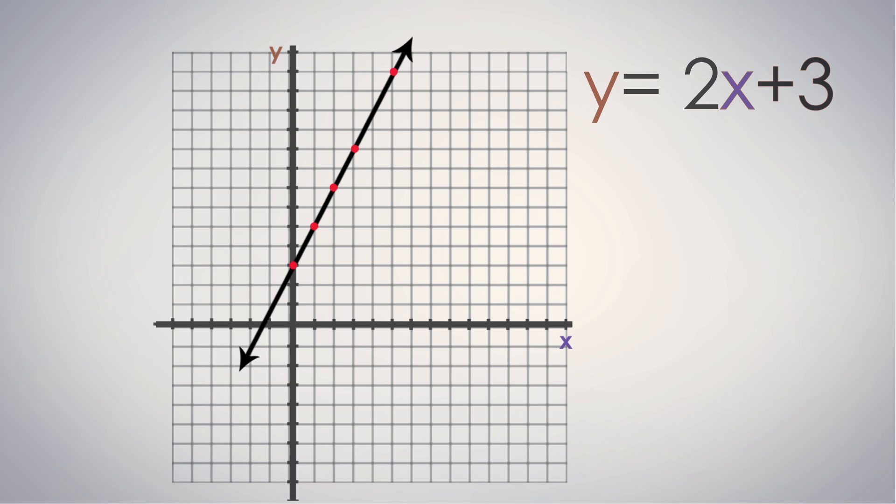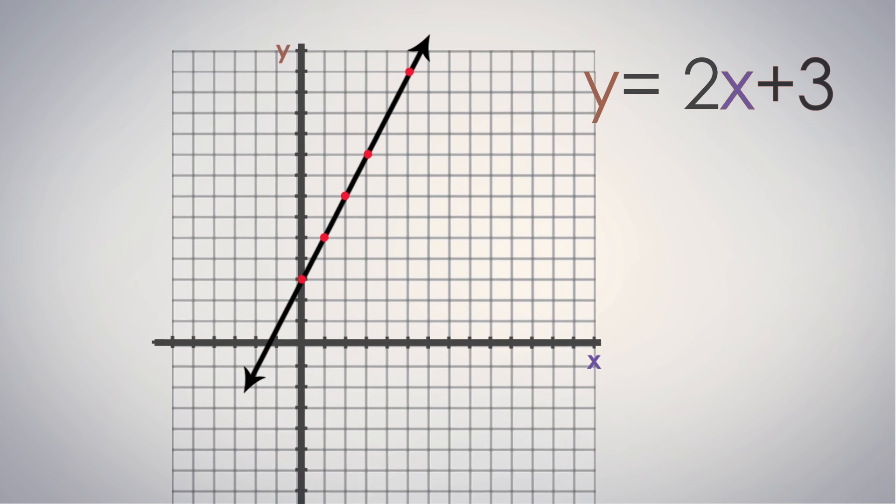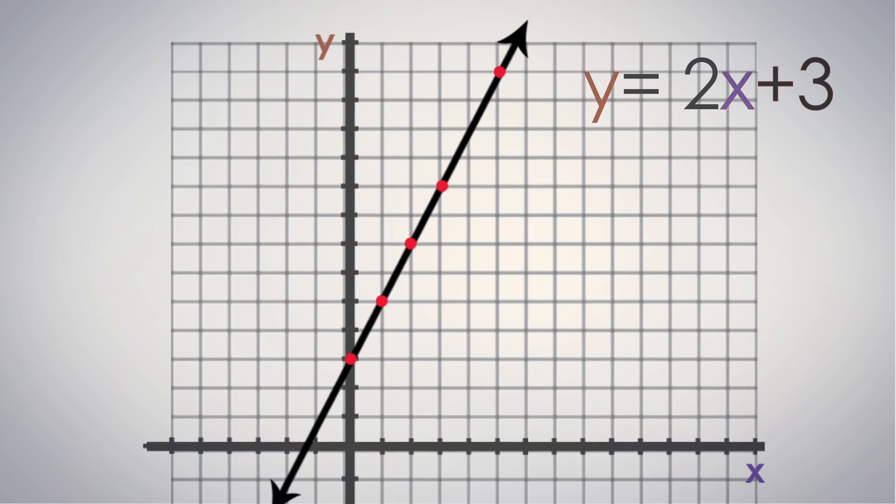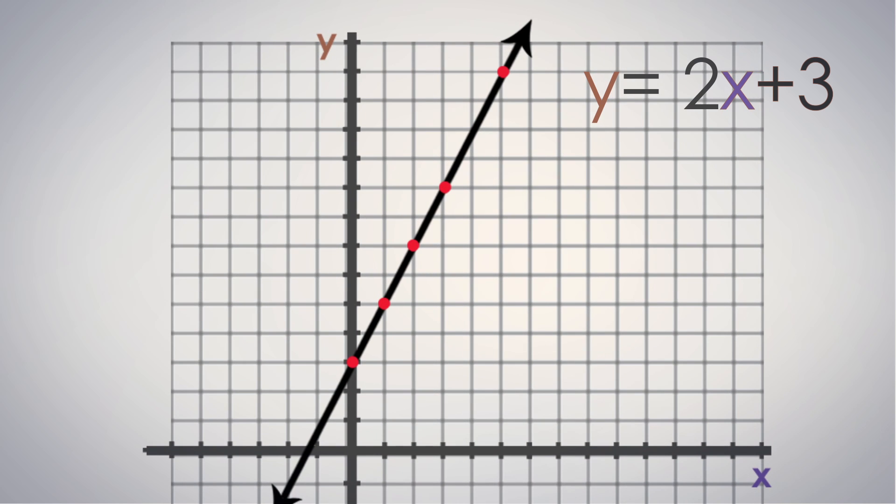What else do you notice? As mentioned in the previous video, linear functions reflect a constant rate of change. Let's take a look at how rate of change is reflected in this graph. Notice that between the first two pairs of points, we have moved up two fans as we moved over one day. This reflects that with every day that passes, you get two more fans.